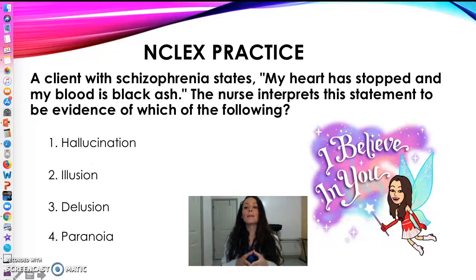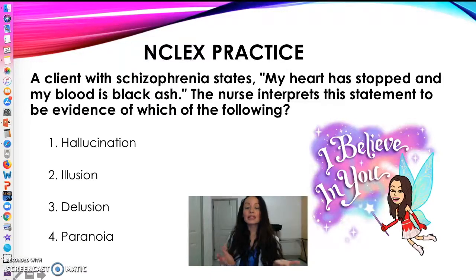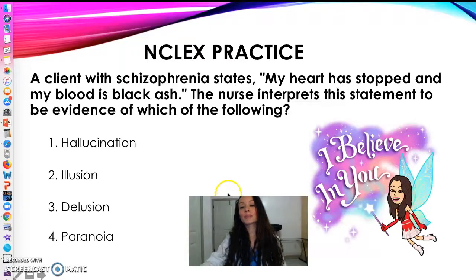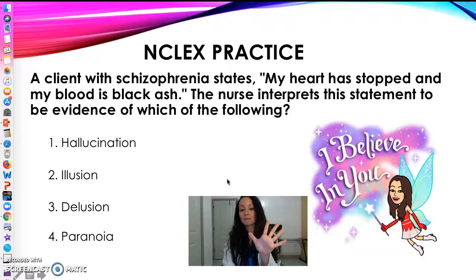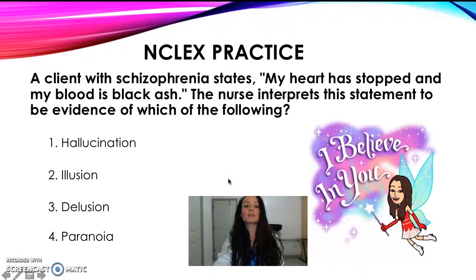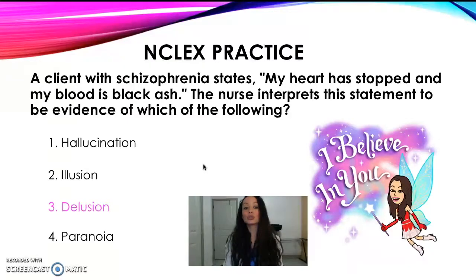A client with schizophrenia states 'my heart has stopped and my blood is black ash.' The nurse interprets the statement to be evidence of which of the following: a hallucination, an illusion, a delusion, or paranoia? This was a bit of a trick question. Is it related to the five senses? No. Are we misperceiving something? No. Is the patient saying someone is chasing them or the FBI is coming? No. So the correct answer is a delusion — a false fixed belief.